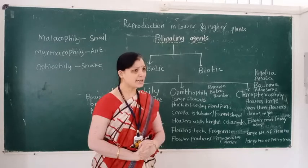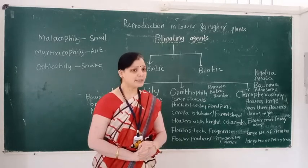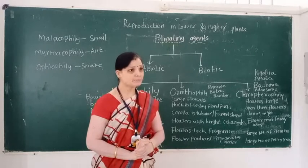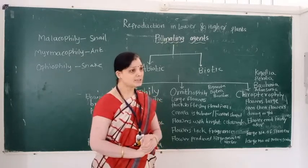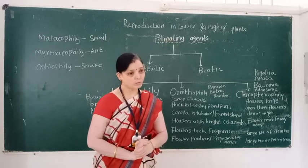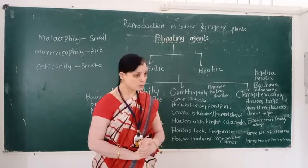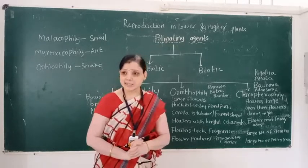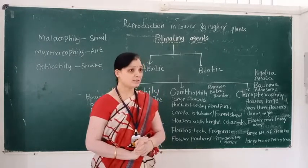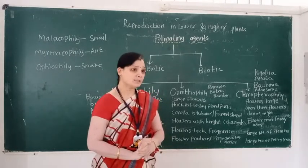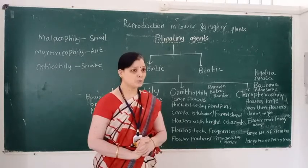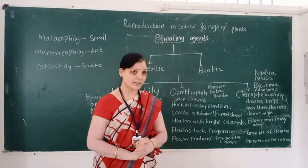Examples of anemophily include sugarcane, bamboo, and various grasses. For water pollination, the pollinating agent is water. Flowers are small and inconspicuous. Pollen grains are covered by a mucilaginous substance. The exine of pollen grains is absent. Examples include Vallisneria and Ceratophyllum. These are examples of hydrophily.